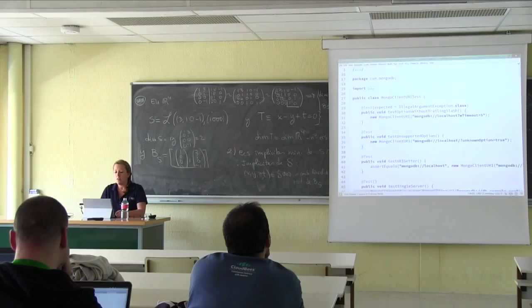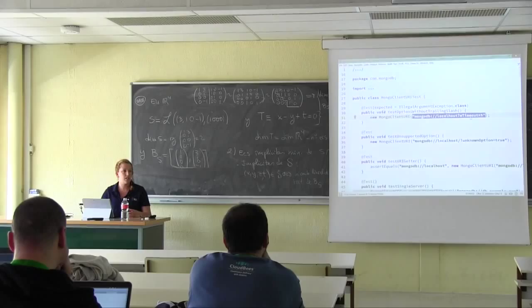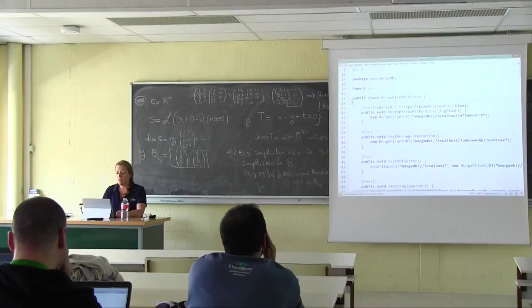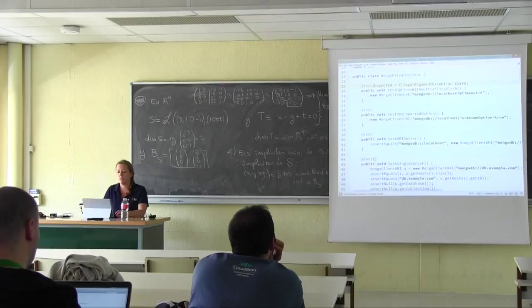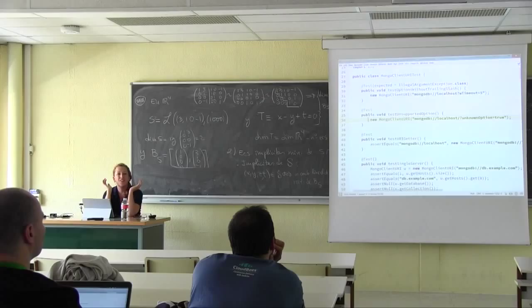This is testing MongoClientURI. The job of this class is: you give it a string — a URI — it parses the different sections and turns it into a more useful object covering authentication, collection, and database. The first few tests in this class are kind of fine. Here's an example of expecting an exception, and here's another where the test looks almost exactly the same but we don't expect an exception. What exactly are we testing? We're testing that we don't get an exception, but we're not explicitly saying that.